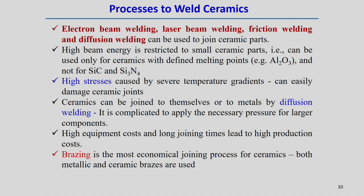Processes to weld or join ceramics include electron beam welding, laser beam welding, friction welding, and diffusion welding — these are normally applied for joining ceramic components. High-energy beam processes are restricted to small ceramic parts and can be used only for certain ceramics with suitable melting points, for example aluminum oxide (Al2O3), but not for silicon carbide (SiC) or silicon nitride (Si3N4). So electron beam or laser beam welding for ceramics is limited to particular components.